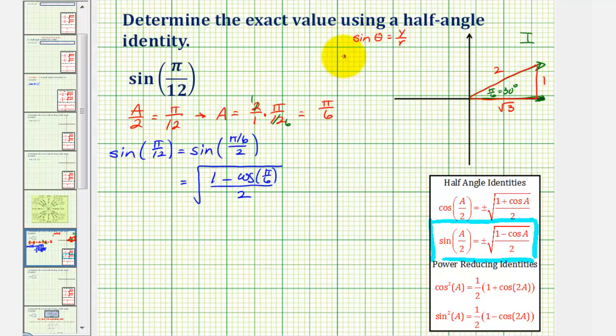So using our reference triangle, cosine of pi over six radians is equal to the ratio of the adjacent side to the hypotenuse, which would be square root three divided by two. And of course, we can check this trig function value on the unit circle.